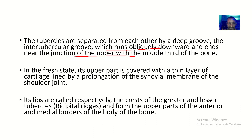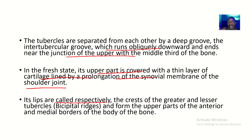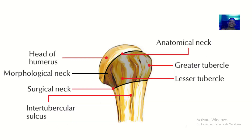In fresh states of the humerus — like in a freshly dissected person — the upper part is covered with a thin layer of cartilage lined by a prolongation of the synovial membrane of the shoulder joint. The lips of the intertubercular groove are called respectively the lip from the greater tubercle and the lip from the lesser tubercle, also known as the crest of the greater and crest of the lesser tubercles. These form the upper parts of the anterior and medial borders of the bone.